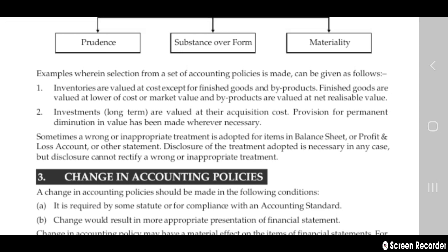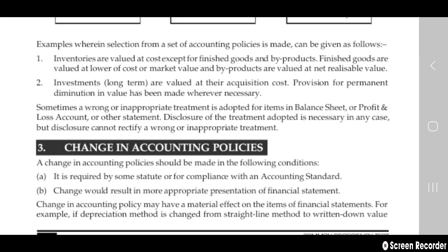For example: inventories are valued at cost, except for finished goods and by-products. Finished goods are valued at the lower of cost or market value, and by-products are valued at net realizable value. Investments are valued at their acquisition cost, with provisions for permanent diminution in value made wherever necessary.